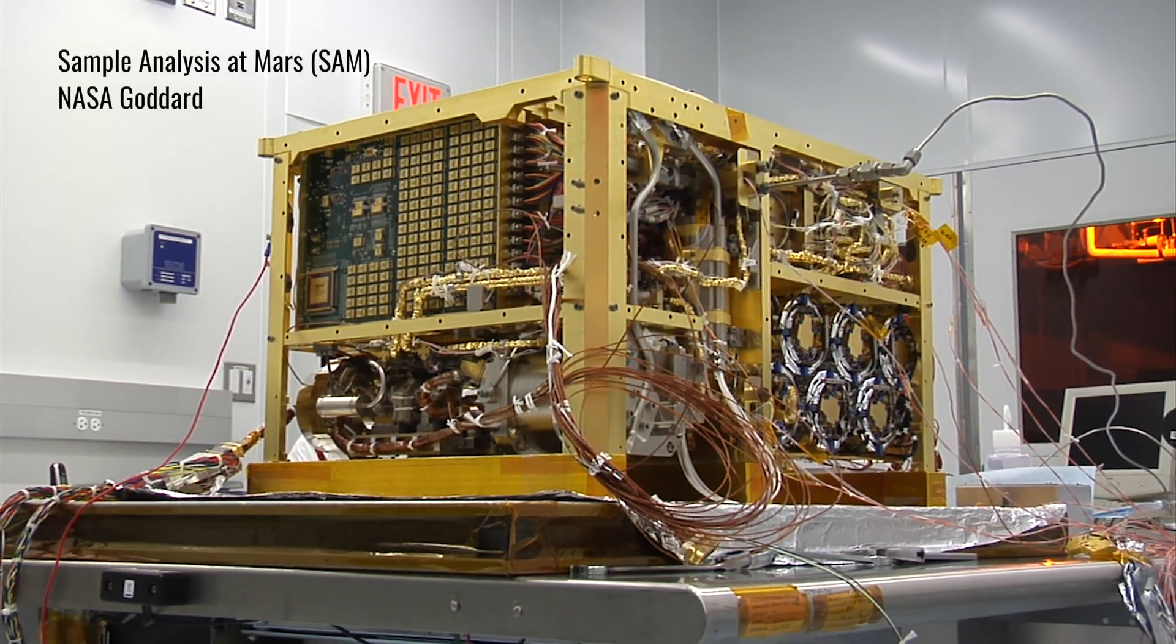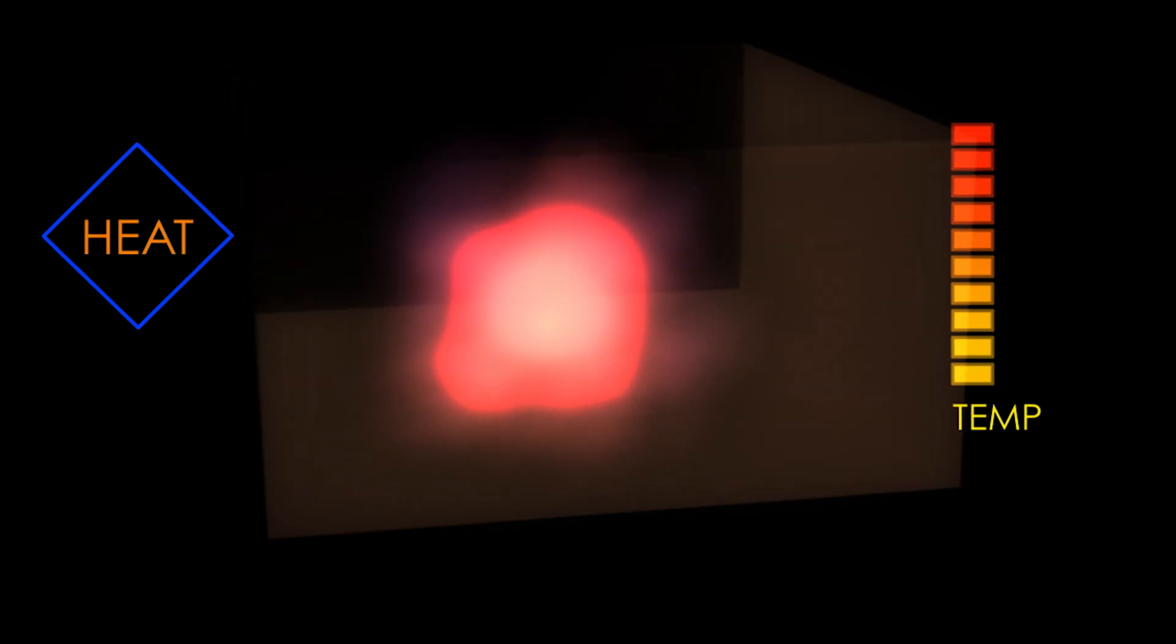Curiosity's onboard chemistry lab, called SAM for short, detected the hydrocarbons by using a new dual heating process that was developed after the rover landed.